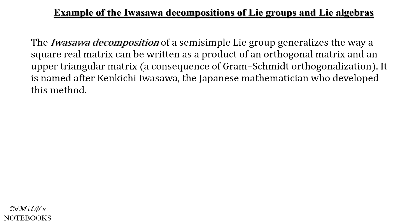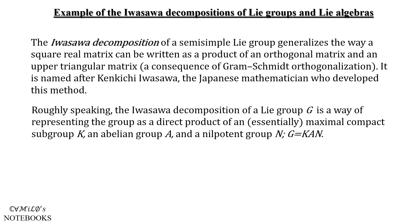We're going to be using something just like it to get our decomposition. Anyways, it's named after Kenkichi Iwasawa, the Japanese mathematician who developed this method. Roughly speaking, the Iwasawa decomposition of a Lie group is a way of representing it as the direct product of a maximal compact subgroup K, an abelian group sitting inside called A, times a nilpotent group N.